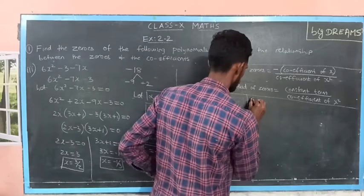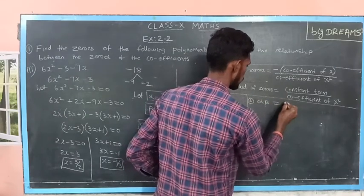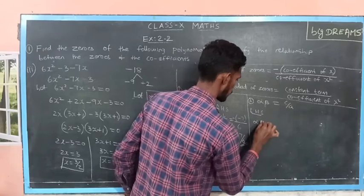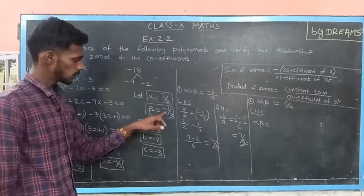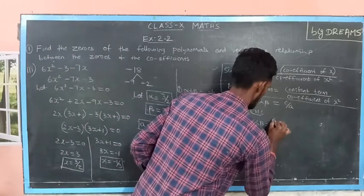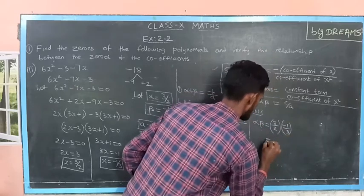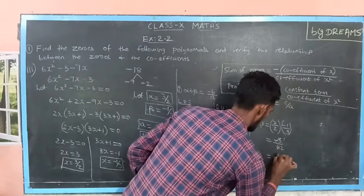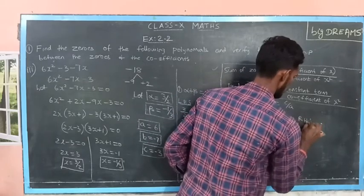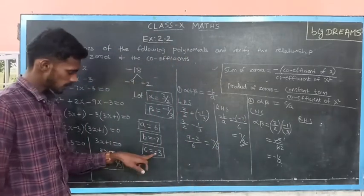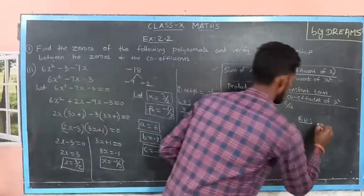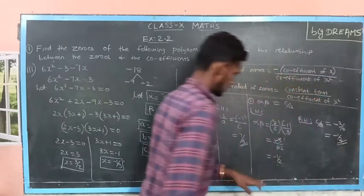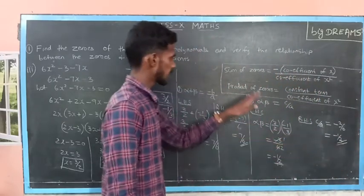Then the second condition: product of zeros, that is alpha into beta, is equal to 3 by 2 into minus 1 by 3, which is equal to minus 3 by 6. This can be simplified as minus 1 by 2. Then consider the RHS, c by a, which is also minus 1 by 2. LHS is equal to RHS. The second condition is also verified.